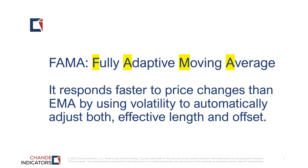My original solution was to make adaptive moving averages, which I invented almost 30 years ago, but they only adapt the effective length. Now I've gone a step further by developing the Fully Adaptive Moving Average — FEMA. FEMA responds faster to price changes than the equivalent EMA.